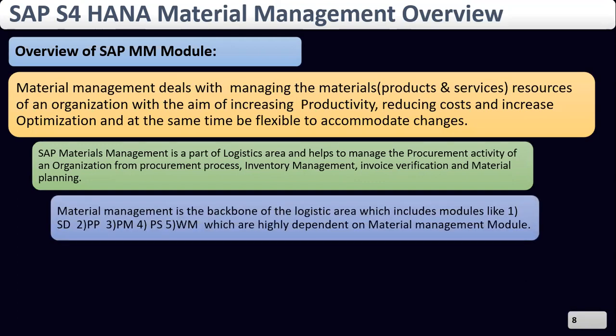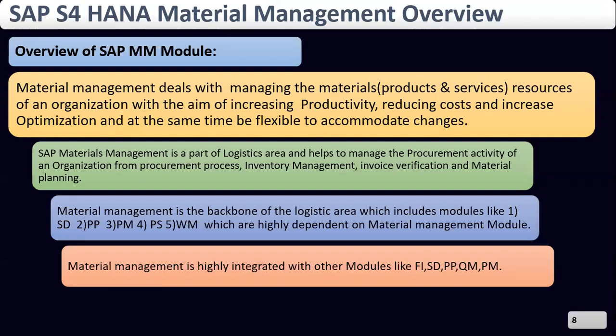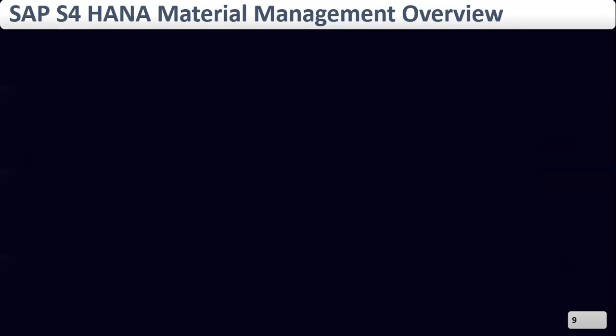Material management is the backbone of the logistics area, which includes modules like sales and distribution, production planning, plant maintenance, and warehouse management. Financial accounting (FI) is highly dependent on the material management module. Material management is highly integrated with other modules like FI, sales and distribution, production planning, quality management, and plant maintenance.